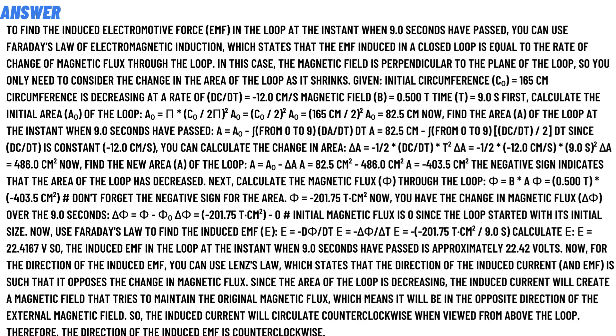At 9.0 s, first calculate the initial area of the loop. The formula is given below. Then use EMF: The EMF in the loop at the instant when 9.0 seconds have passed is approximately 22.42 volts. Now for the direction of